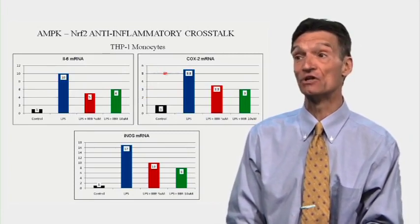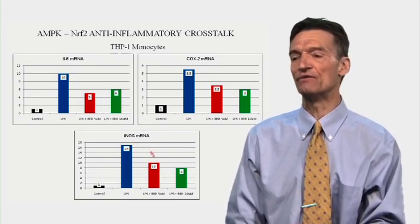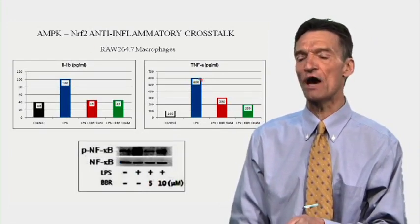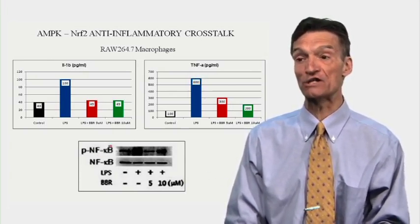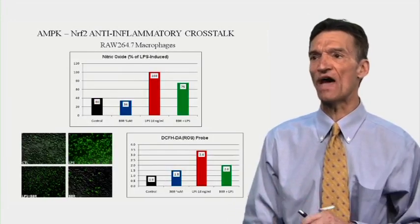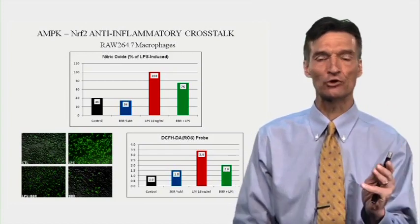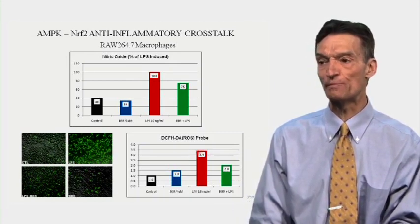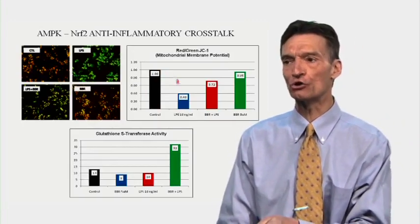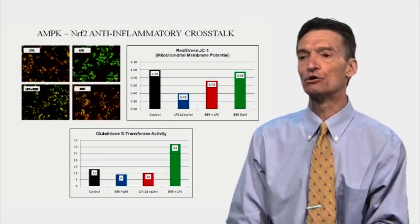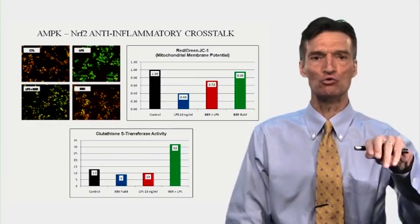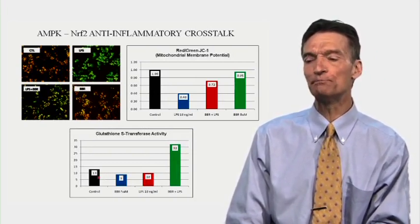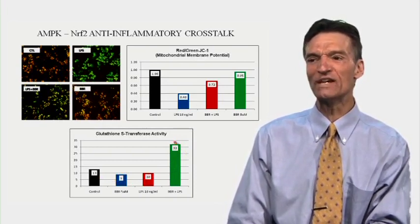In the THP-1 monocytes with lipopolysaccharide, we see IL-6, COX-2, iNOS inflammatory mediators — and we blunt this with berberine. In the RAW 264.7 macrophages we see the same: IL-1β, TNF-alpha — the work product of NF-κB. Translocation of NF-κB to the nucleus occurs in response to lipopolysaccharide. Inflammatory nitric oxide is kicked in with LPS and blunted with berberine. Markers of oxidative stress are increased with LPS and blunted with berberine. Mitochondrial failure is occurring with LPS and blocked with berberine. Glutathione S-transferase — involved in using glutathione to quell the oxidative fire — is lost with LPS but dramatically augmented with berberine plus LPS.